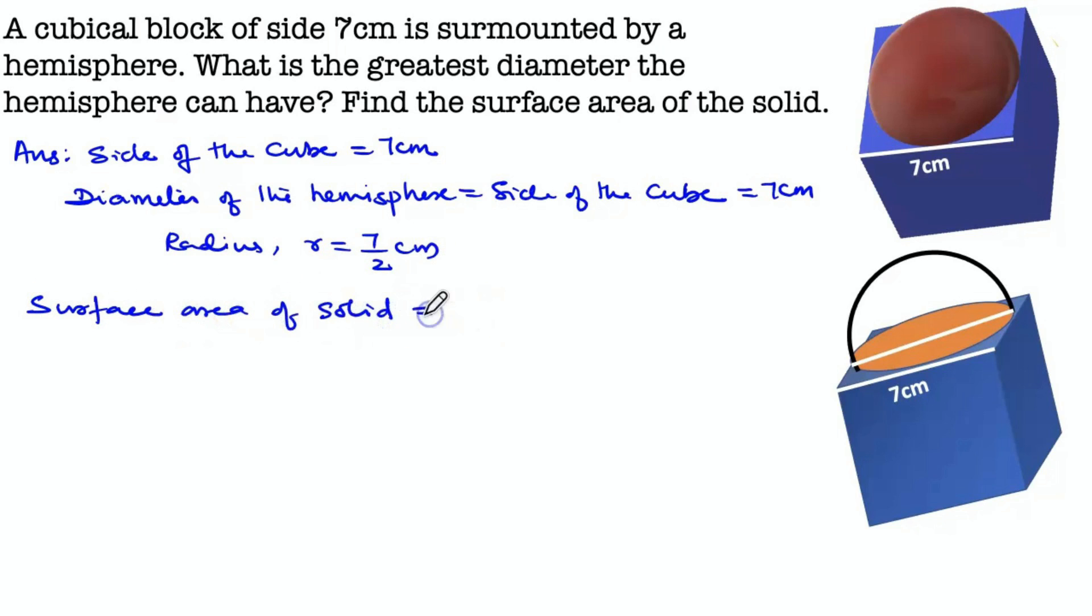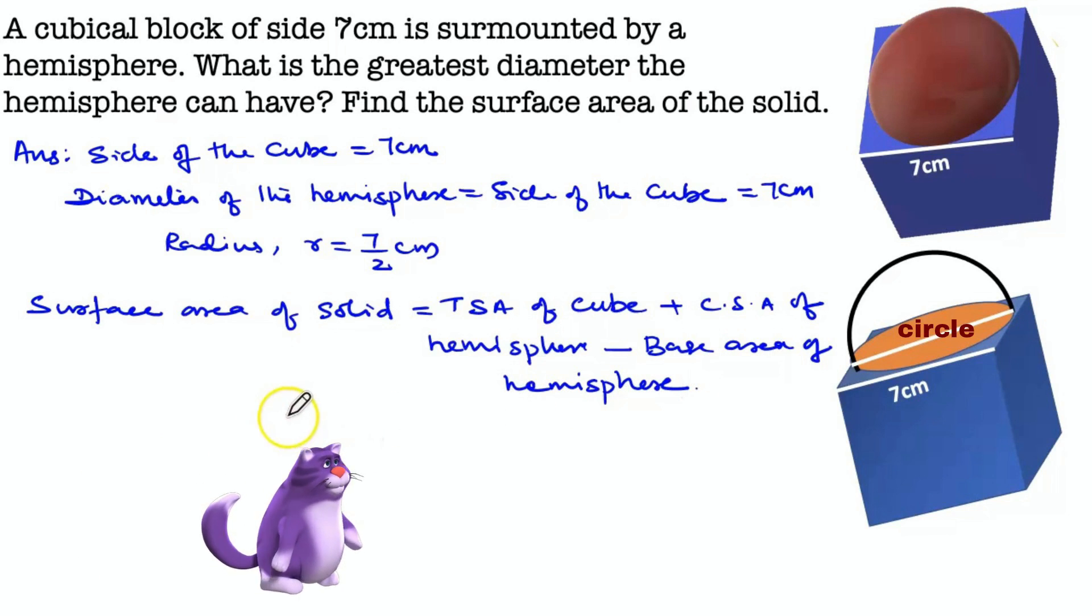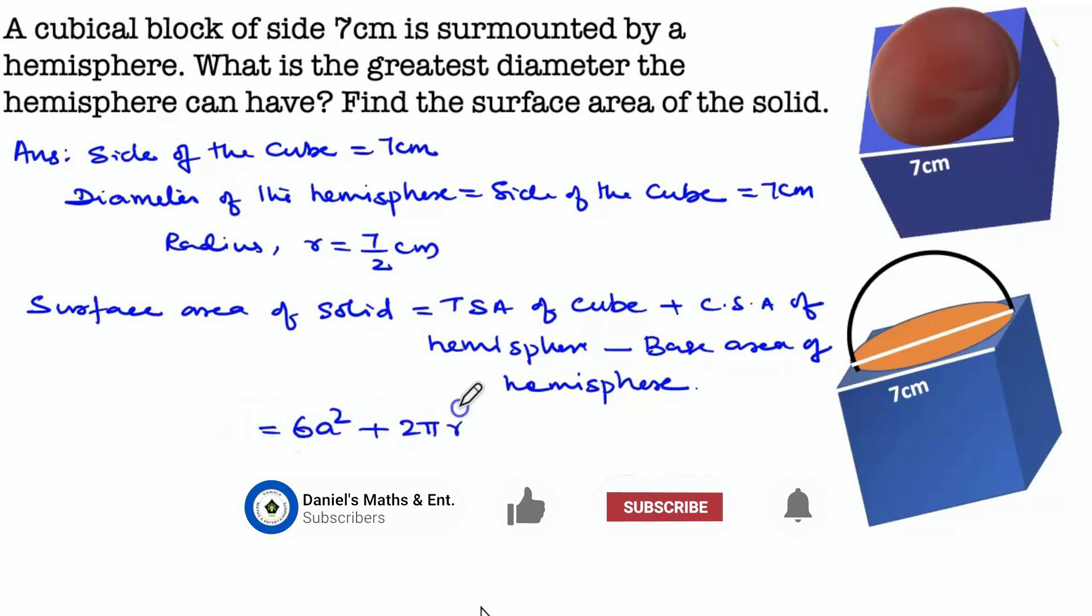Surface area of the solid equals total surface area of cube plus curved surface area of hemisphere minus base area of hemisphere. Base area of hemisphere is area of circle. Equals 6a² plus 2πr² minus πr², equals 6a² plus πr².